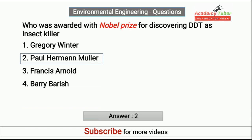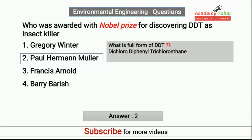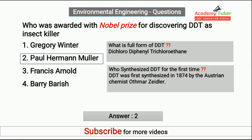What is the full form of DDT and who synthesized DDT for the first time? The full form of DDT is dichlorodiphenyl trichloroethane. This is very important. DDT was first synthesized in 1874 by the Austrian chemist Othmar Zeidler.